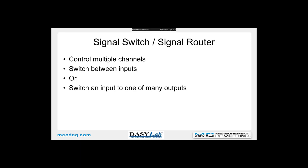Now a quick look at the signal switch and signal router modules, which allow you to control multiple channels in two different ways. The signal switch has multiple inputs, and the module's settings determine which input is routed to the output. The signal router takes a single input and routes it to one of many outputs — only one output has live data at a time.